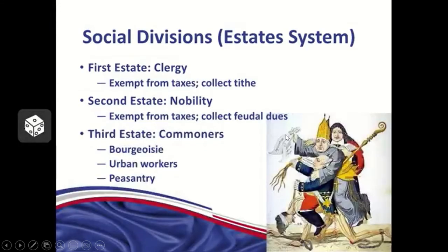Our story about the road to the French Revolution really has to begin with French society. If you look at French society prior to the start of the French Revolution, you'll see that it was divided into three major groups known as estates. In the estate system, there are three different parts of society. The first estate was the clergy, a very small group — only about 1% of the total population.